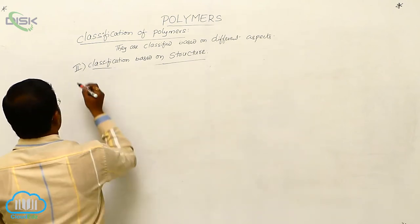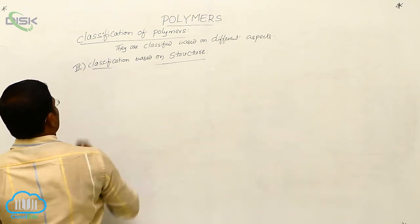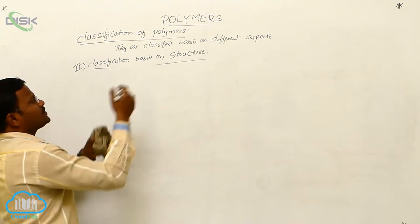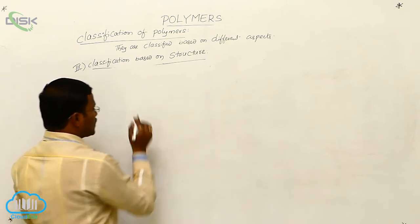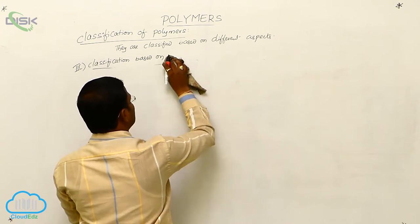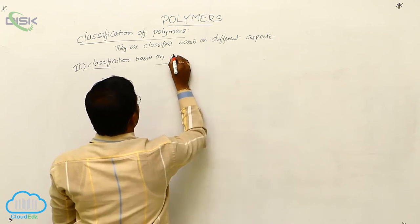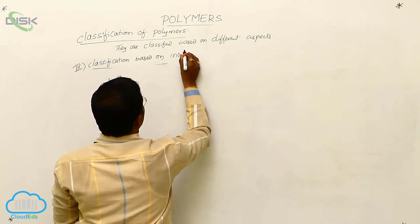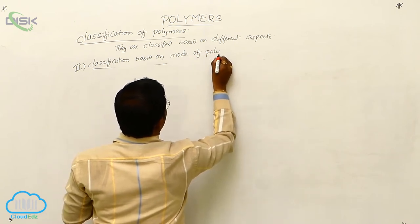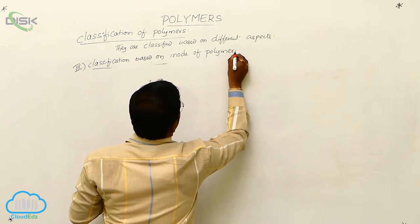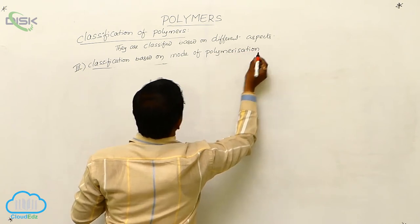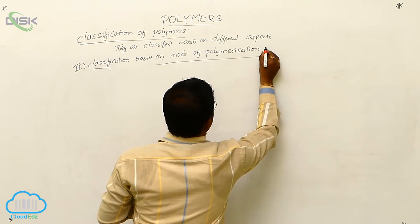The third type of polymer classification is the classification of polymers based on mode of polymerization.